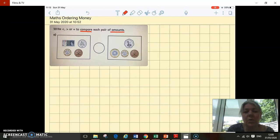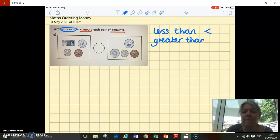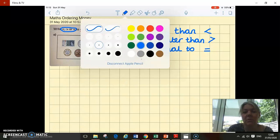This question is asking us to compare amounts of money. You can see there are two amounts. We're going to have to use these symbols here and if you remember from the start of Year 4, one of the symbols means less than, one means greater than or more than, and the other symbol means equal to.